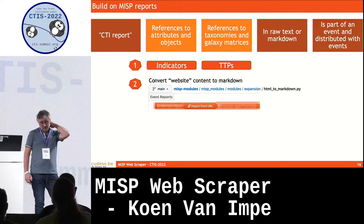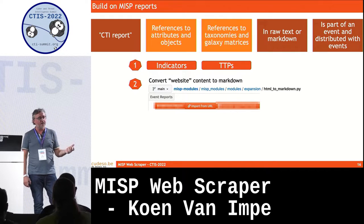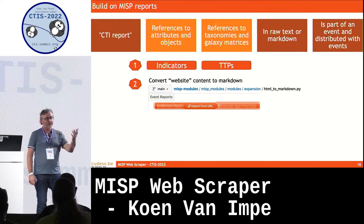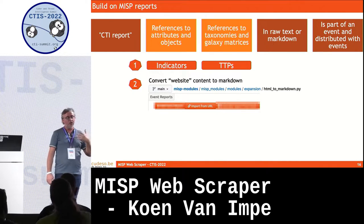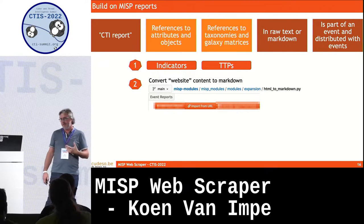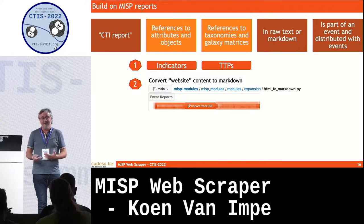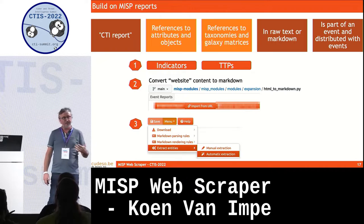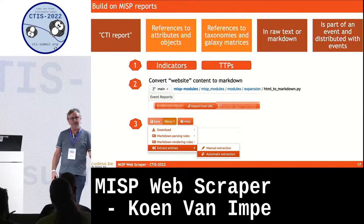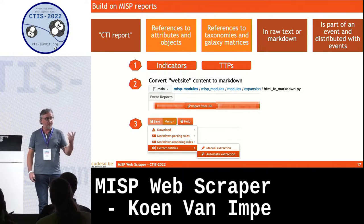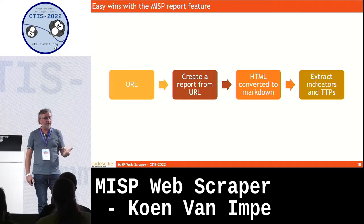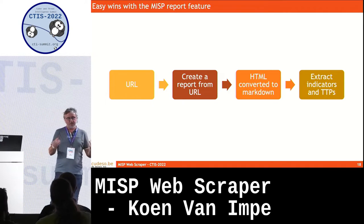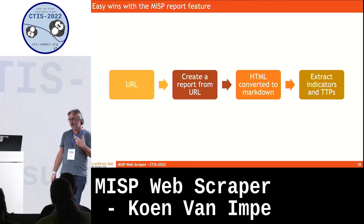There's a MISP module that allows you to do a conversion from HTML to markdown. I give the MISP report module a URL, it goes to crawl the website, gets the HTML, and that HTML gets converted to markdown — that solves the next part of my problem. Lastly, there's also a feature in MISP report that allows you to automatically extract entities, so I don't have to do this on my own. It crawls the URL, creates a MISP report, and extracts the entities and TTPs.